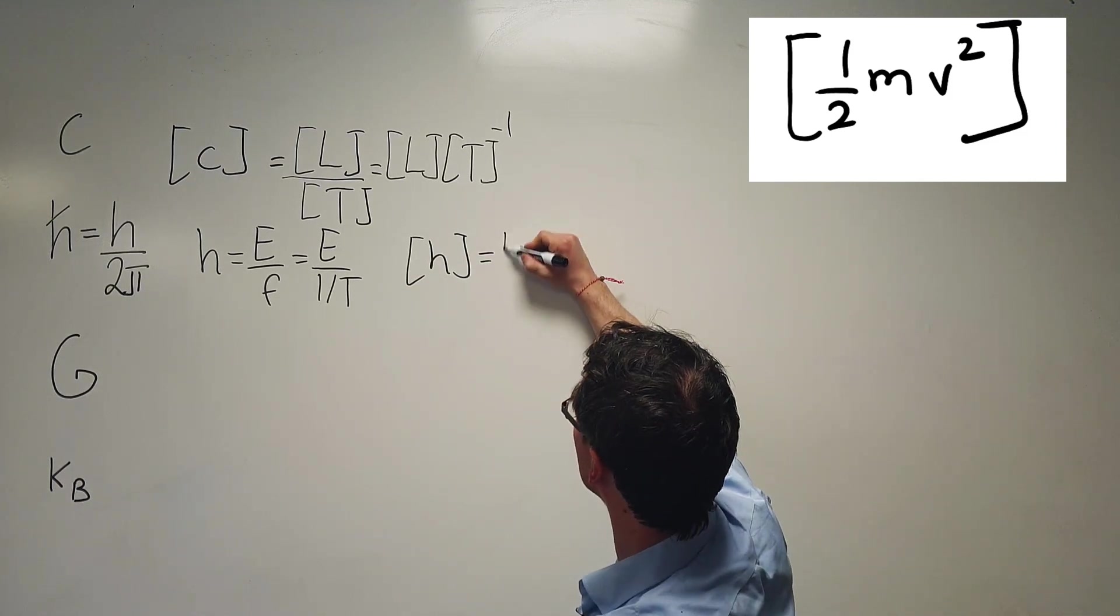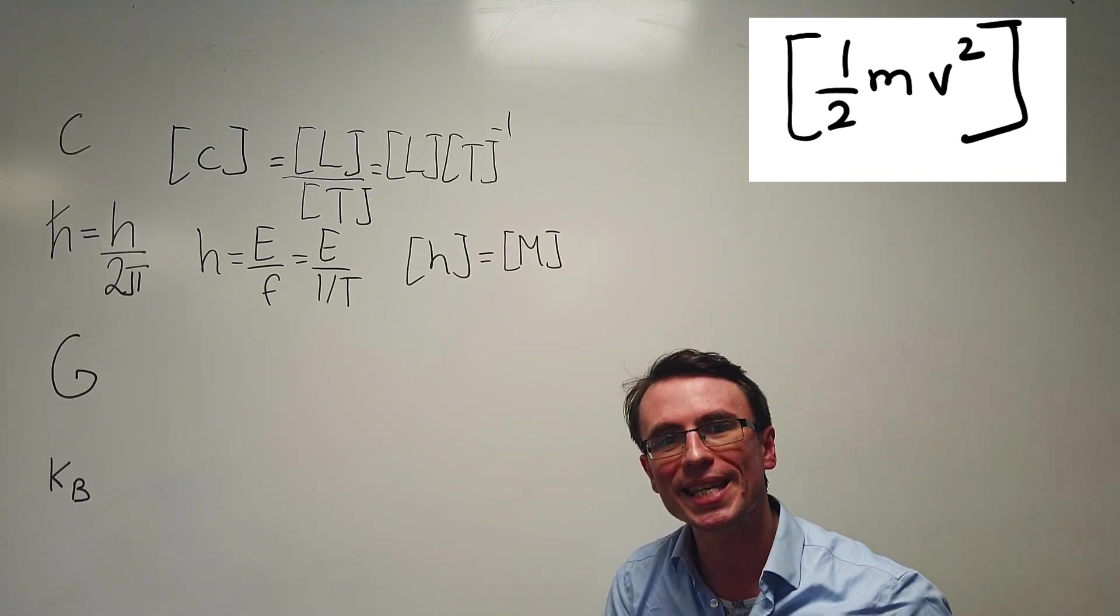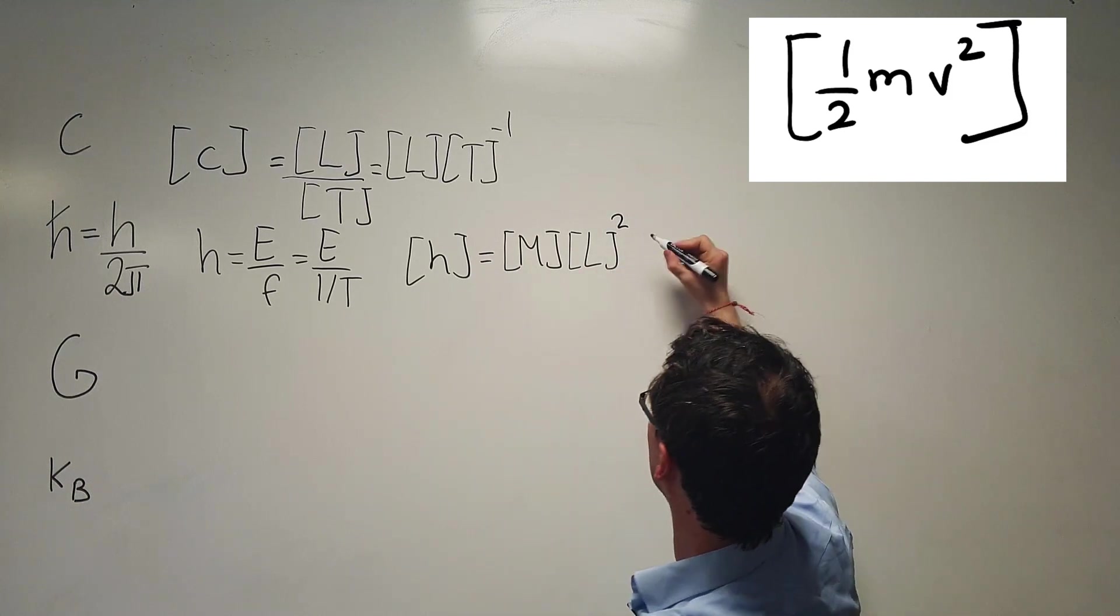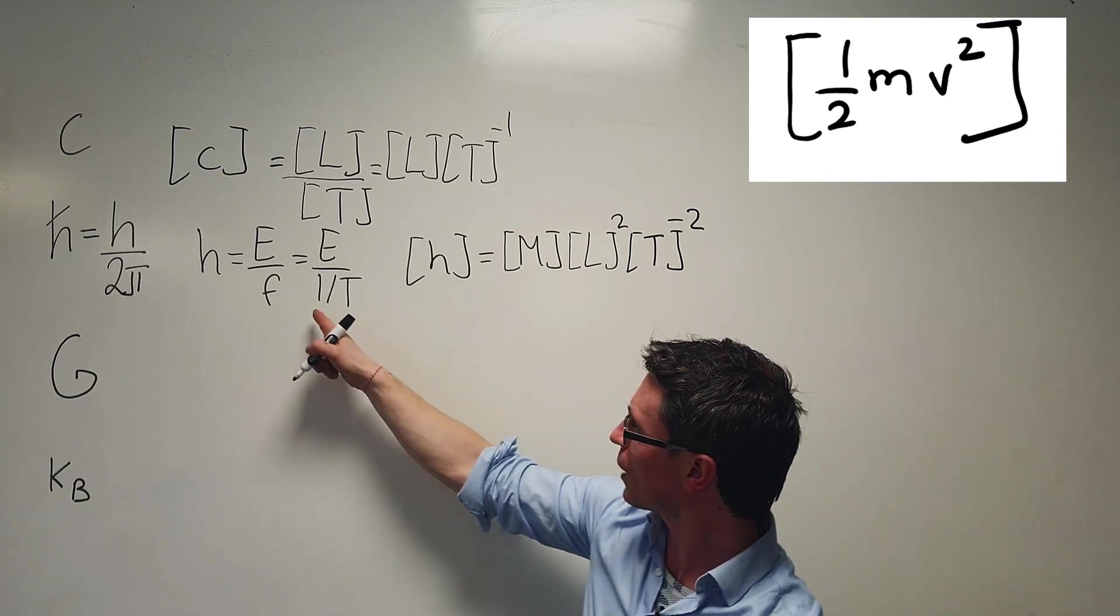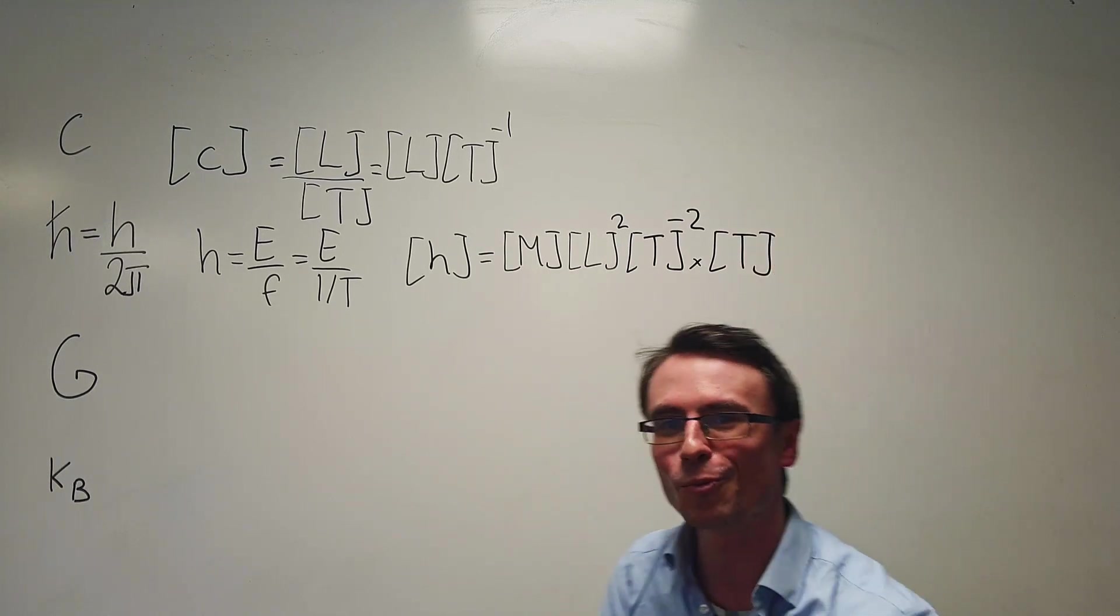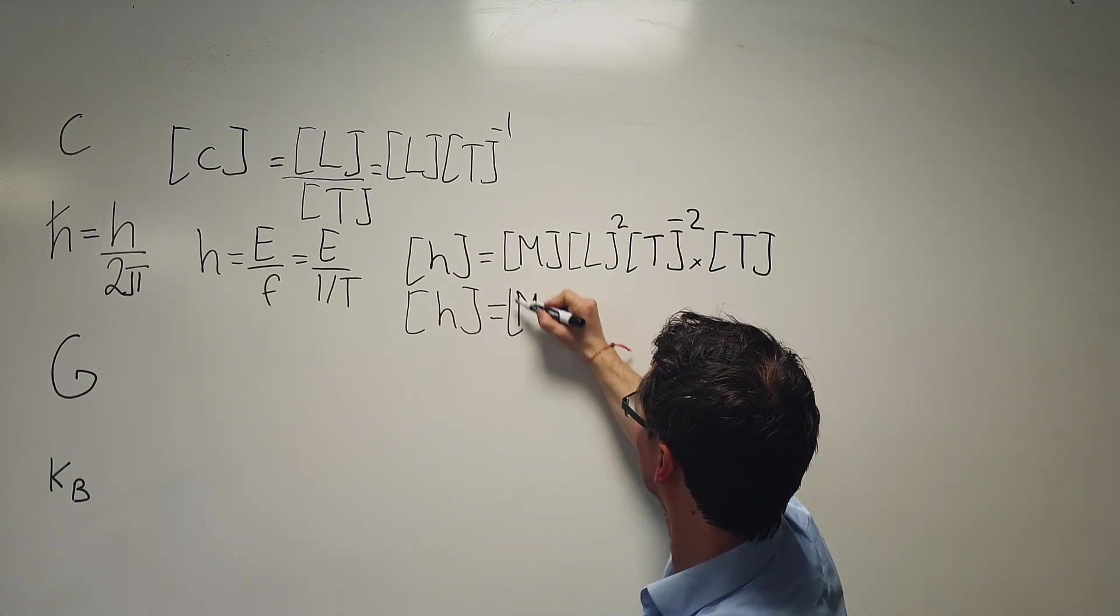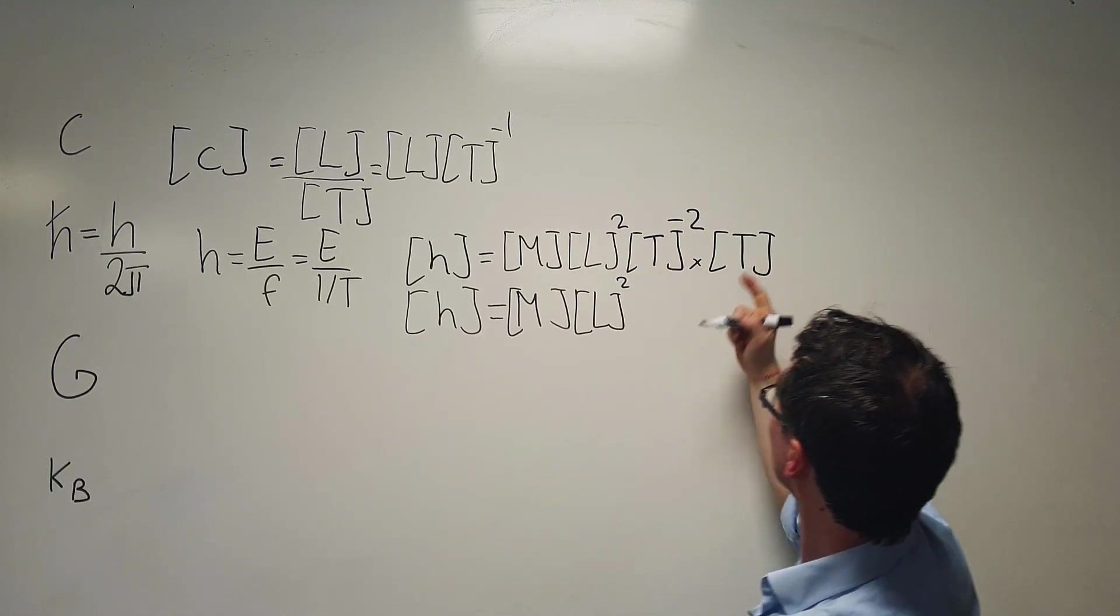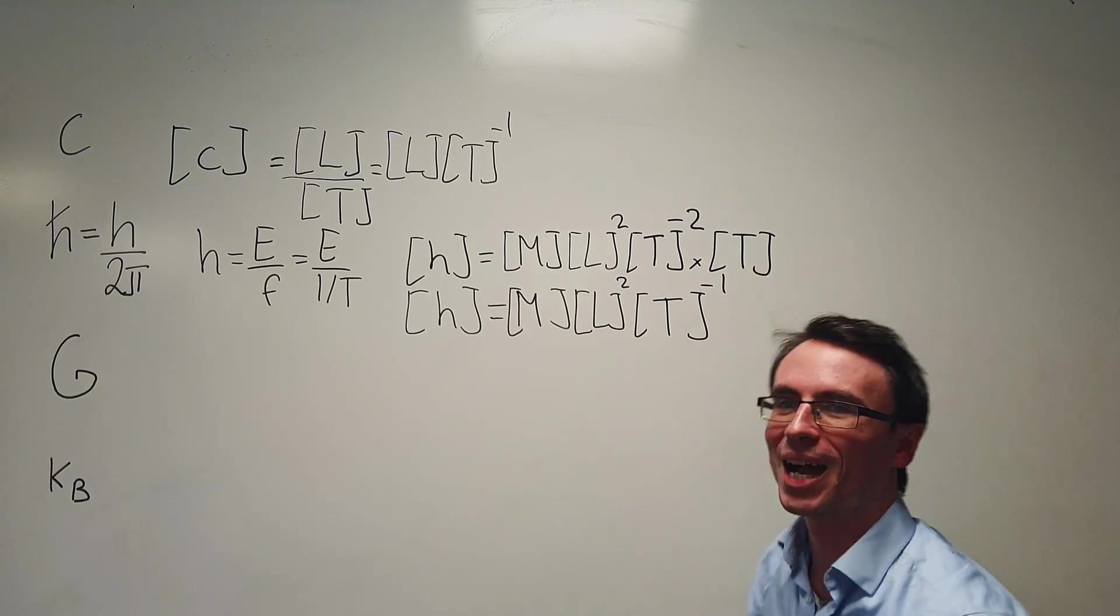The dimensions of H will just be equal to the dimensions of energy divided by this. This will equal the dimensions for mass, which I'm going to write as brackets m times speed squared. So that will be L to the power of two multiplied by T raised to the power of minus two. Now let's not forget this factor. So we need to add in another factor of T over here. And what we're going to get is that the dimensions of H are just going to be M, like that. We're going to get a factor of L squared, and then finally, we have a factor of T to the power of minus one.